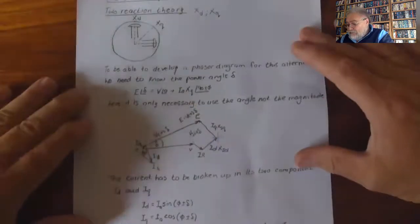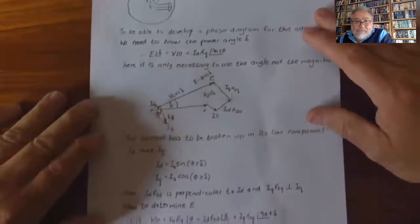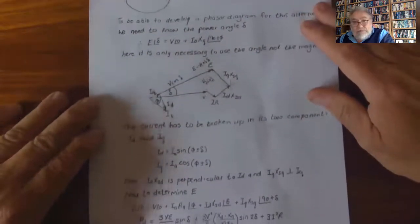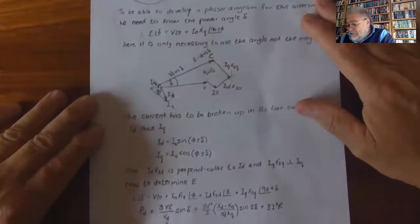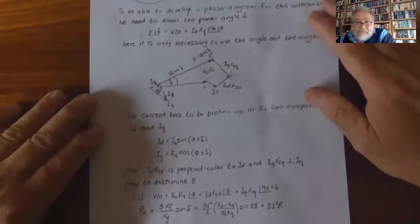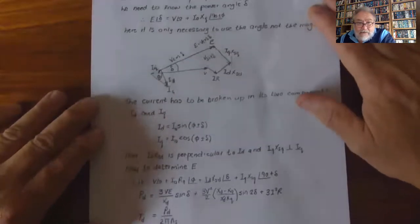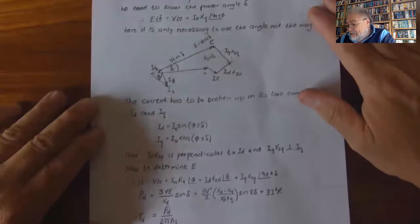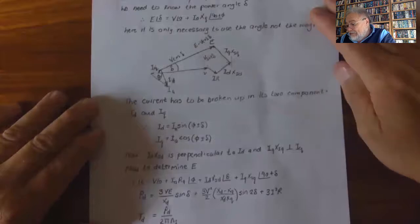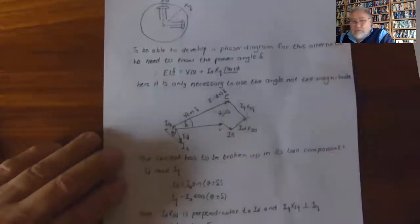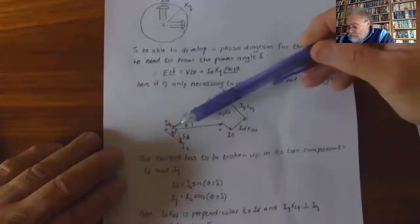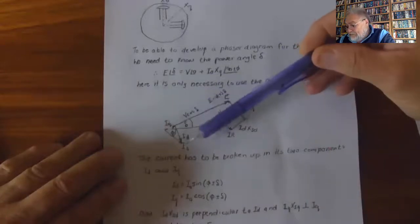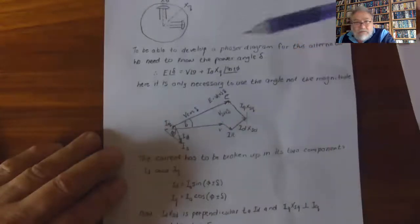Once we have the angle, we can start to calculate the direct axis and quadrature axis current. Id = Ia·sin(φ + δ), and Iq = Ia·cos(φ ± δ). Those are the two components: Iq is always in phase with E, and Id is perpendicular to that.